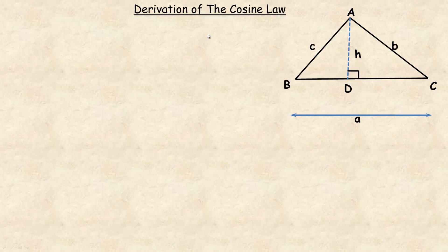This tutorial is about a derivation or a proof of the cosine law. So we're going to start with this, which is just an arbitrary triangle.